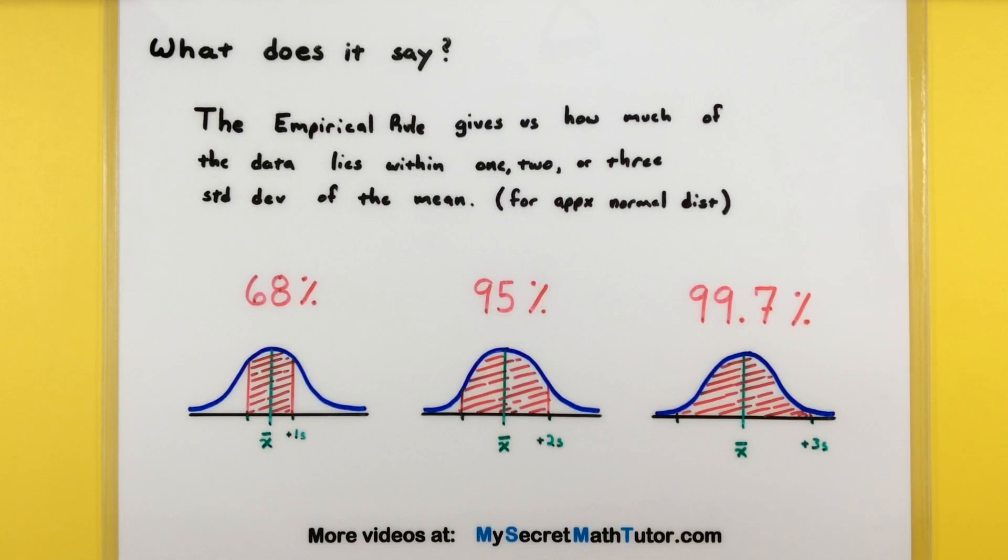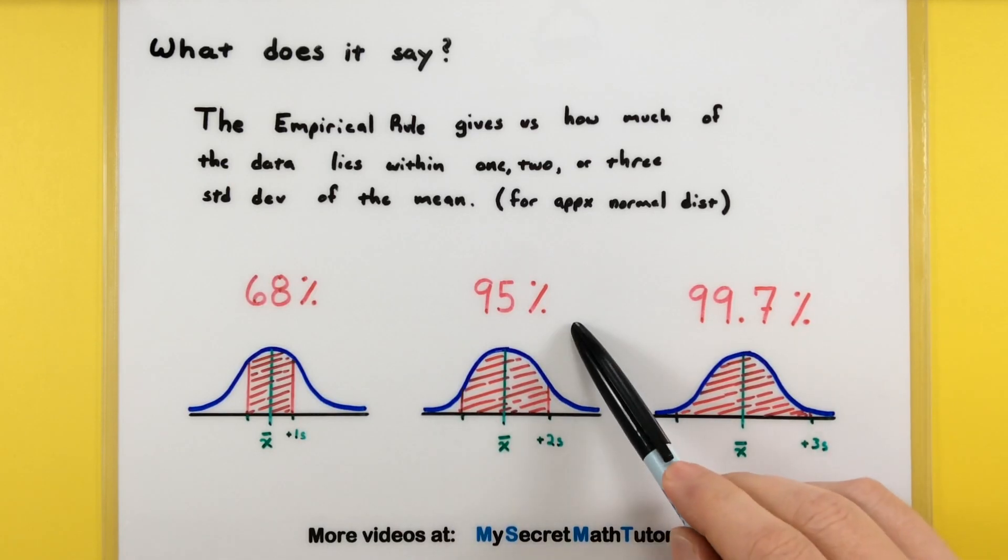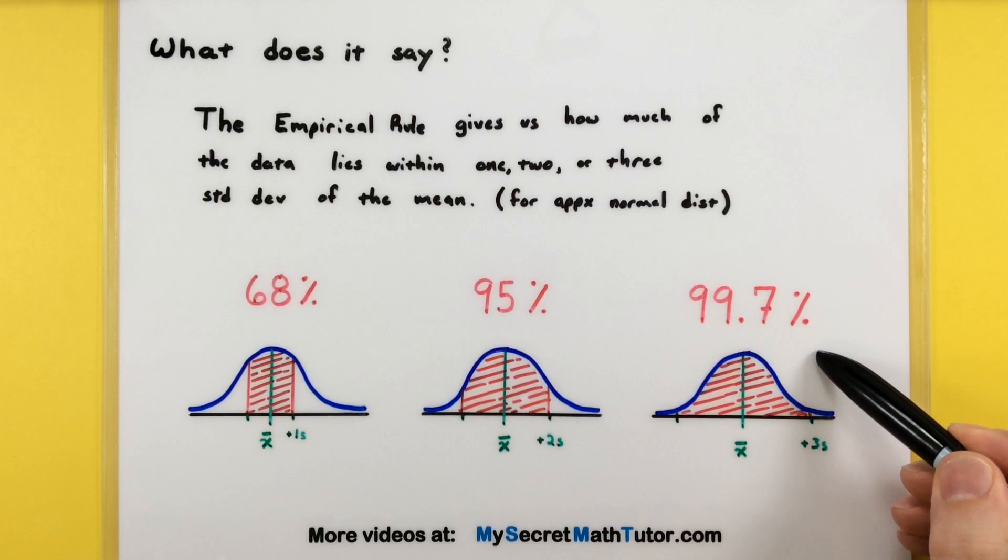What the empirical rule says is that we could expect 68% of our data to be within one standard deviation, 95% of our data to be within two standard deviations, and 99.7% to be within three standard deviations.